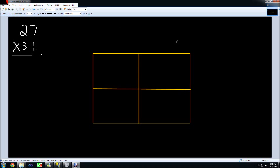The first number 27 will be written in expanded notation, so I'm going to write 20 and 7. The next number is 31, so I'm going to write expanded notation 30 plus 1.